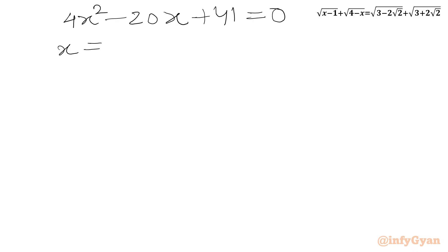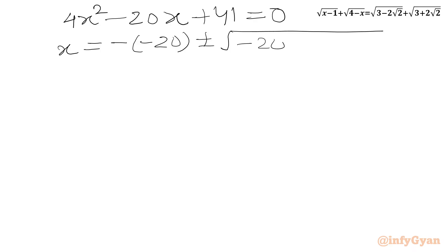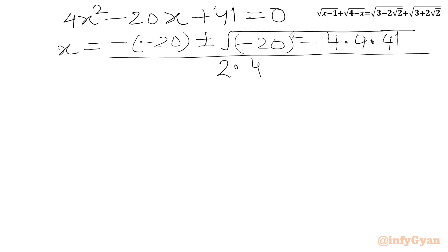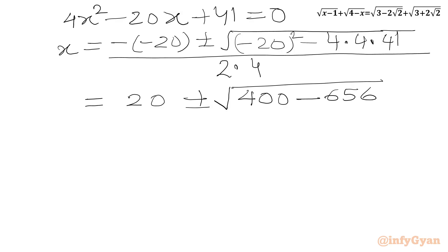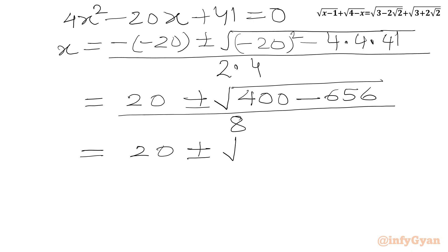Plugging in the values: x equals minus(minus 20) plus or minus square root of (minus 20)² minus 4 times 4 times 41, all over 2 times 4. That gives us: 20 plus or minus square root of (400 minus 656) over 8, which is 20 plus or minus square root of (minus 256) over 8.